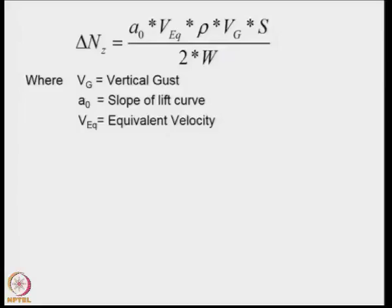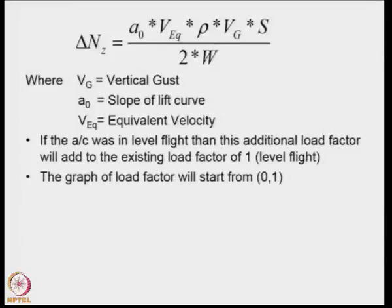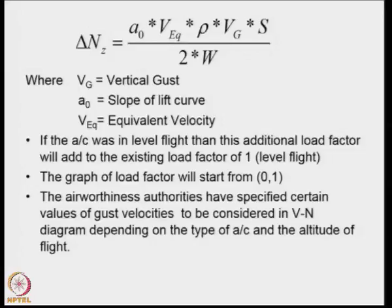The gust velocity U in the previous slide is replaced by Vg in this particular slide. If the aircraft was in level flight, the load factor was 1. This delta nz will act above the 1 and hence, the graph for the load factor due to vertical gust will always start from 0, 1 because it would correspond to level flight at vertical load factor equal to 1.